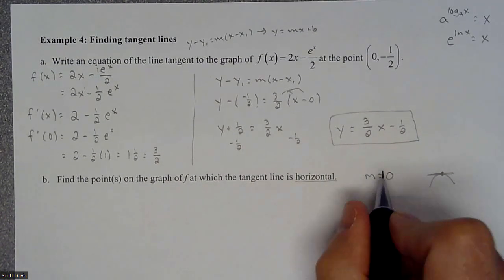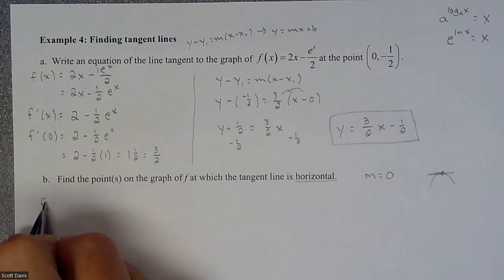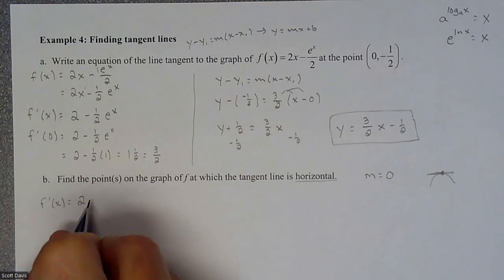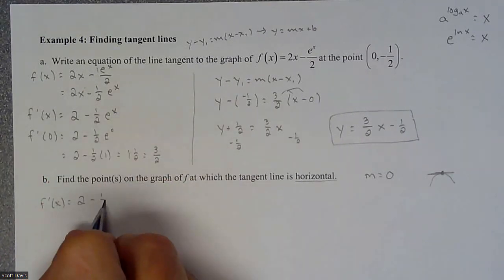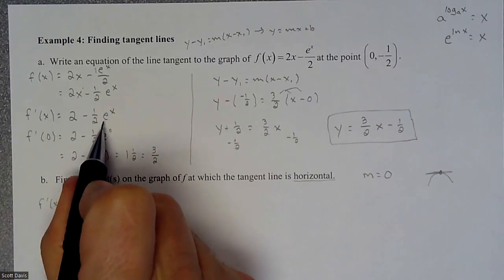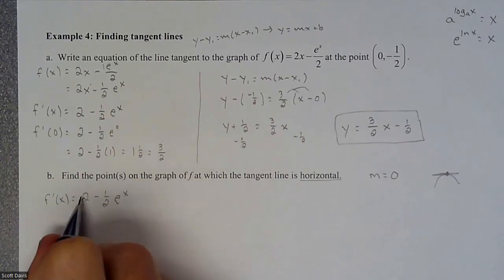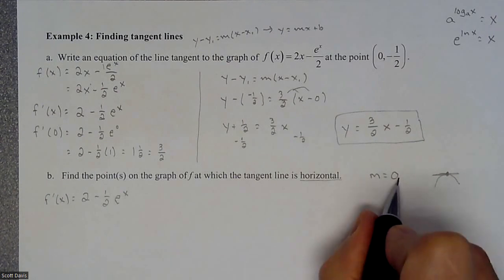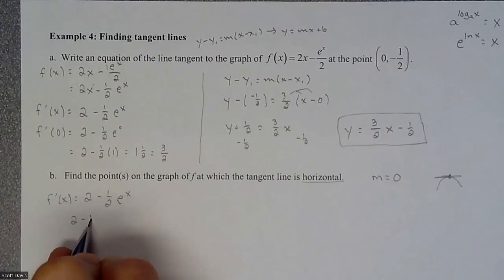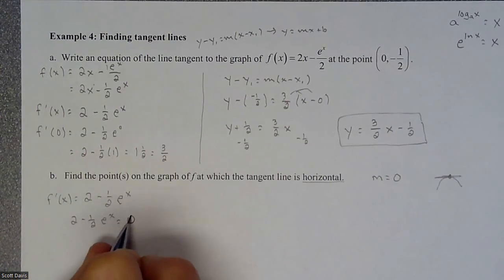So main thing is, is it 0? So what that means is that we will go back and remember that we have a slope equation of 2 minus 1 half e to the x. We found our slope equation right here. And so to figure out when our slope is 0, this is the equation, our slope equation.